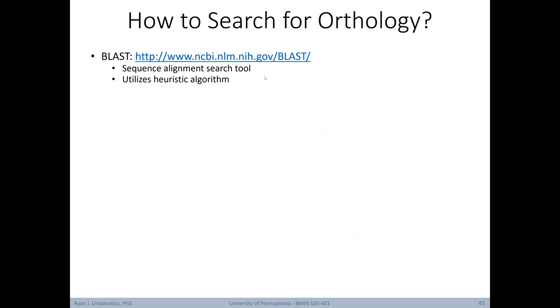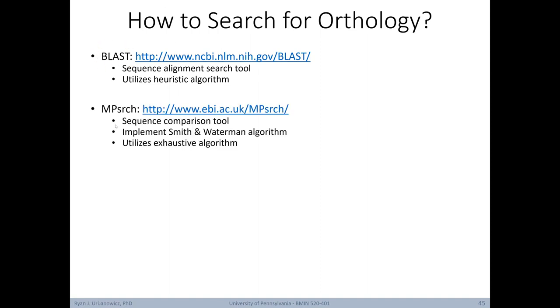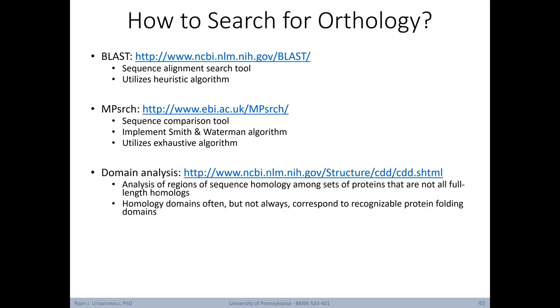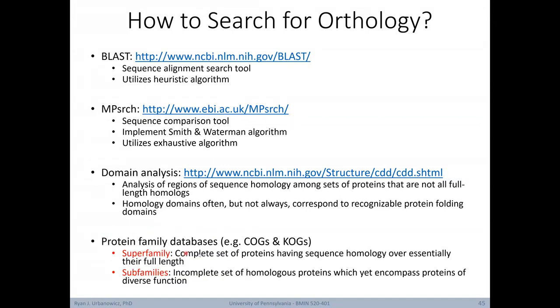We'll briefly discuss some different tools that you can use to search for these types of orthologies. For example, there's BLAST, which is a sequence alignment search tool. MPSearch, which is a sequence comparison tool. You can also conduct domain analysis, or the analysis of regions of sequence homology among sets of proteins that are not all full-length homologs. And also, you can turn to protein family databases, such as COG and KOG. Here you can search for super or subfamilies, where a superfamily is a complete set of proteins having sequence homology over essentially their full length. And differently, subfamily is a complete set of homologous proteins which yet encompass proteins of a diverse function.